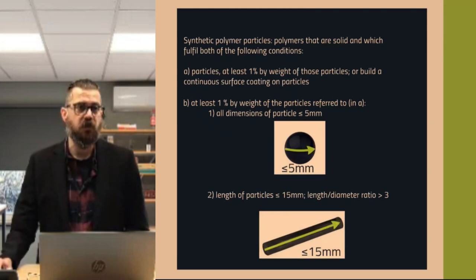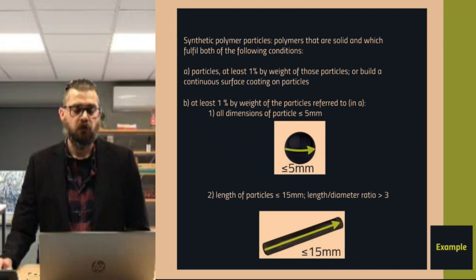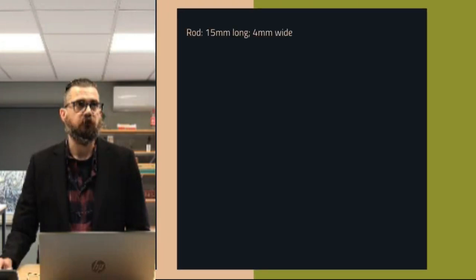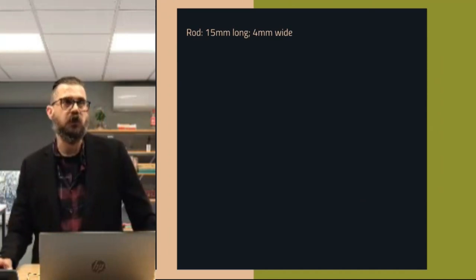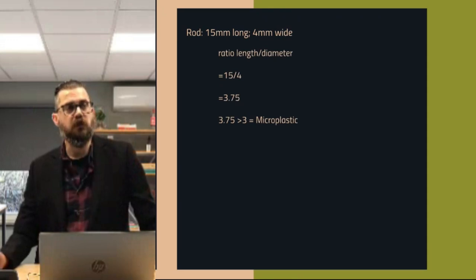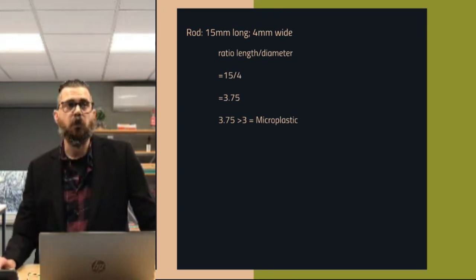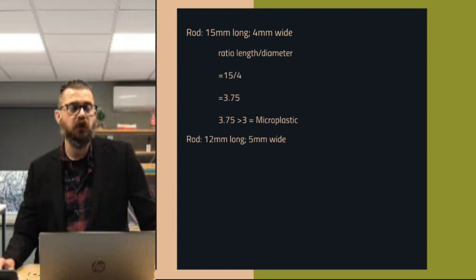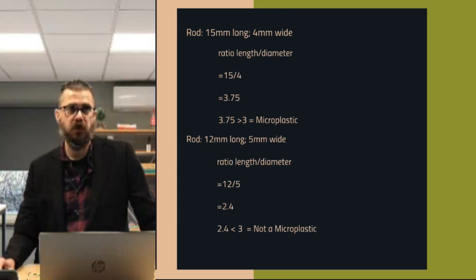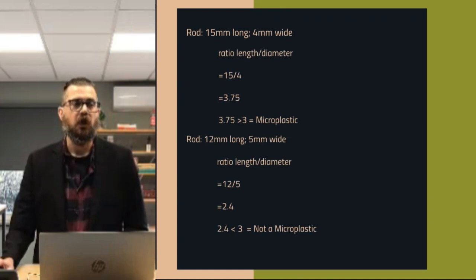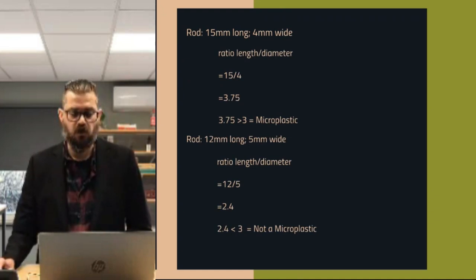Or for length of particles, there's a length-to-diameter ratio larger than 3. Let's take a rod or a fiber that's 15 millimeters long and 4 millimeters wide. You can calculate the ratio and get 3.75, which is larger than 3 and would make this a microplastic. Let's take that same fiber, but now 12 millimeters long and 5 millimeters wide — that gives a ratio of 2.4, which is smaller than 3 and not a microplastic. These examples show how close you can get to those ratios.